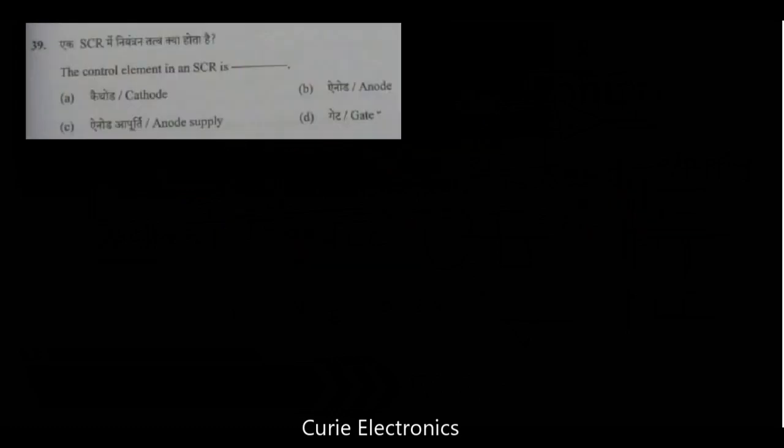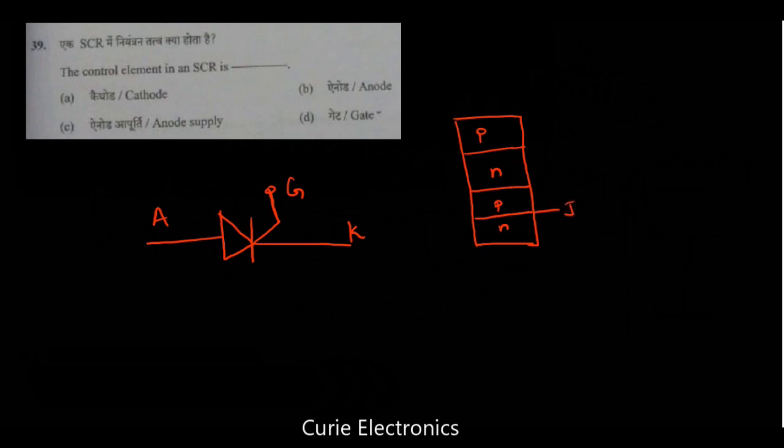Question number 39. The control element in an SCR is. What is the control element in an SCR? Let's draw the symbol for SCR. It is the gate, anode and cathode. It is a PNPN device. So, how many junctions we have? We have three junctions. J1, J2 and J3. So, here the controlling element is the gate. So, the answer is option D is the right answer.